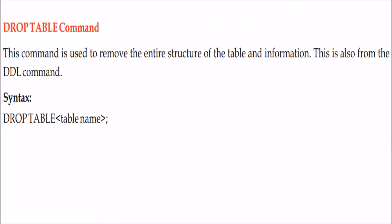The DROP TABLE command is used to remove the entire structure of a table and its information. All the columns and all the rows will be dropped. This is a DDL command, so it deals with tables.